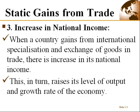The third static gain is increasing national income. When a country has specialized in a particular product and exchanges it in trade for other products, they tend to increase their national income, which goes along with enhancing economic growth. So: first, maximization of production; second, increase in welfare; third, increase in national income; and fourth, expansion of opportunity — we call it vent for surplus.